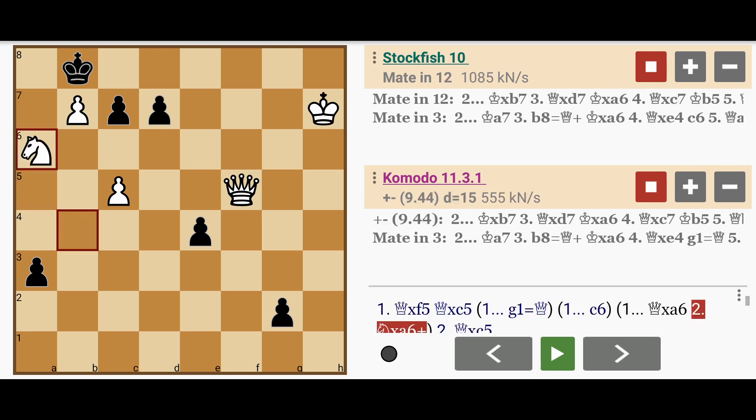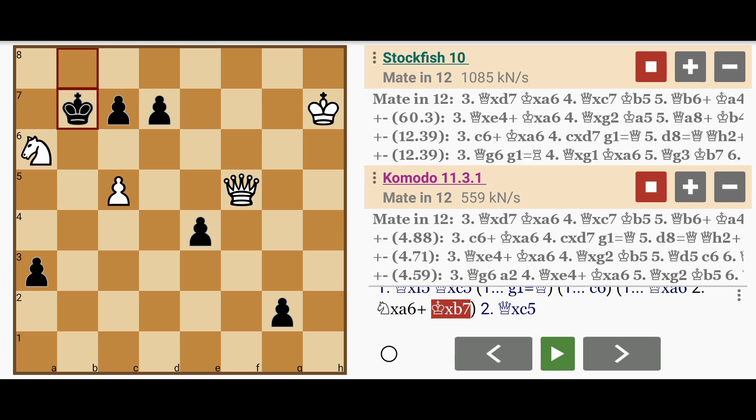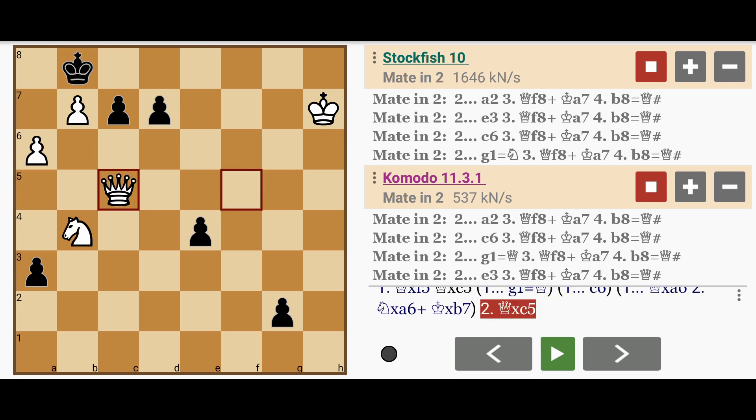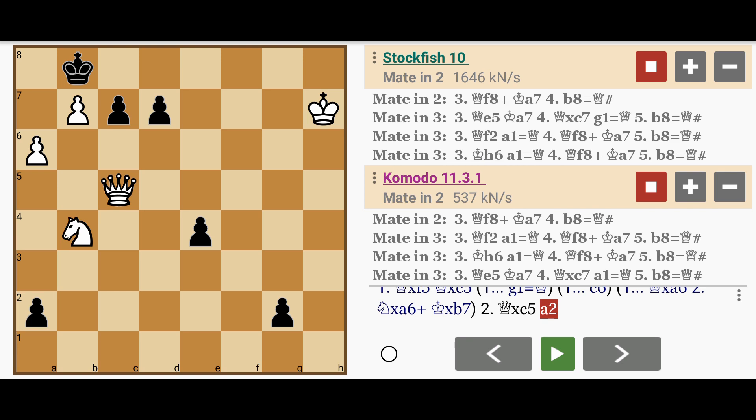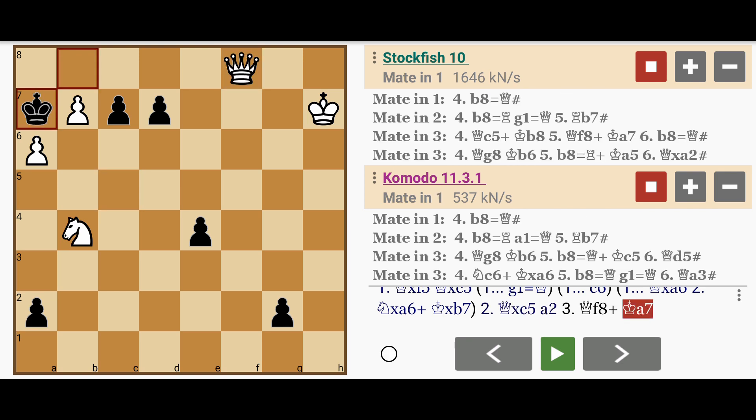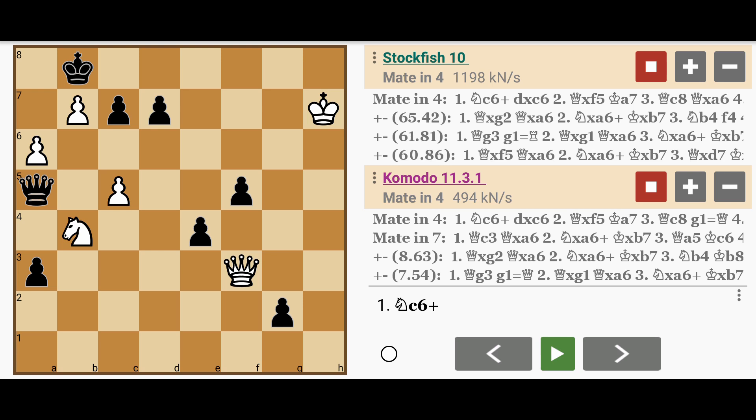After knight captures a6, king captures b7, mate is still possible but takes more time. If queen captures f5 and then queen captures c5, then queen captures c5, a2, queen to f8 check, king to a7, then b8 queen is required because queen to a8 still allows the king to escape to b6. That solution is quite a bit longer.